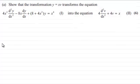Hi. Now for this question we've got to show that the transformation y equals xv transforms the equation 4x squared d2y by dx squared minus 8x times dy dx plus 8 plus 4x squared times y equals x to the 4